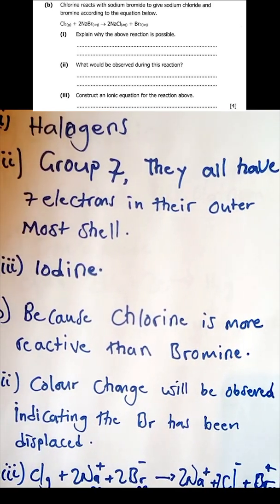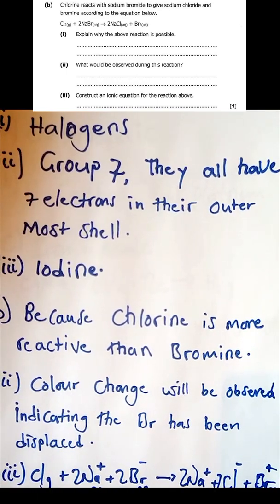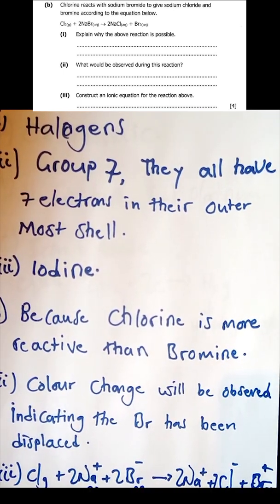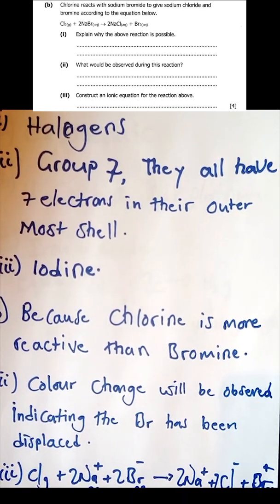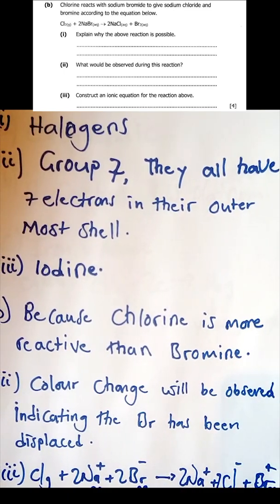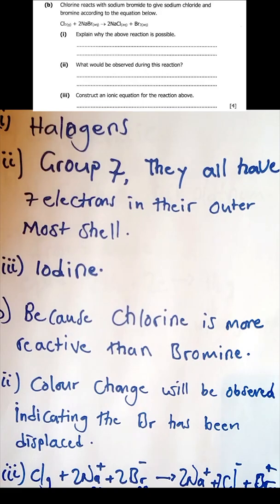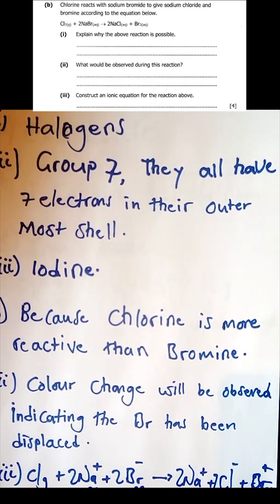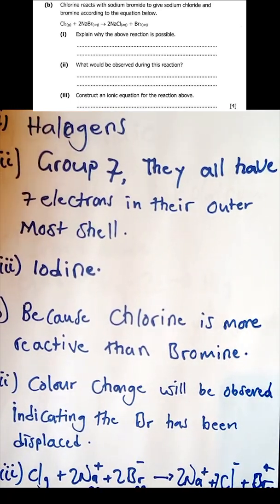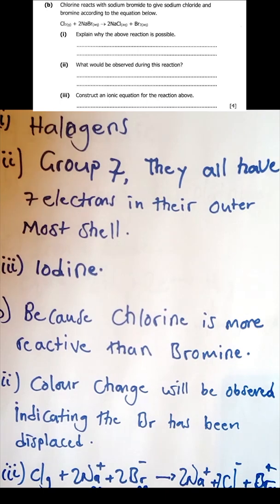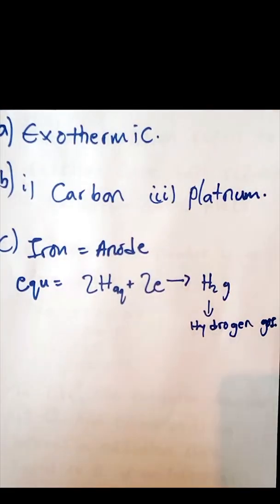Construct an ionic equation for the reaction. Chlorine is in gas form so we leave it as is. Sodium bromide is in aqueous solution, so we separate it into sodium ions and bromide ions. Sodium chloride is also aqueous, so we separate it into sodium ions and chloride ions, and lastly the bromine. We do not cancel spectator ions because the question asks for the ionic equation, not the net ionic equation, so we leave it showing all the ions.